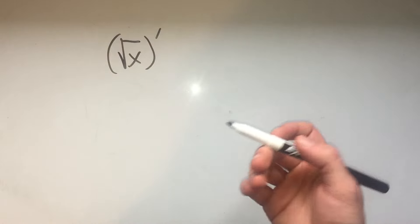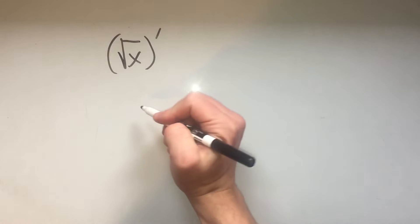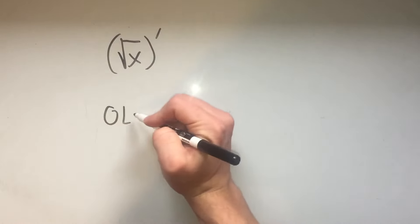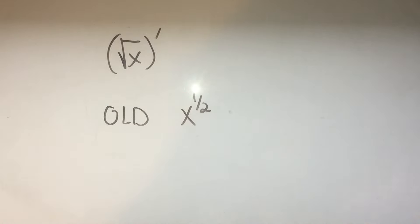Now the old way of doing this is you would have written the square root as x to the one-half power, and then used the power rule for derivatives.